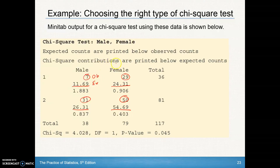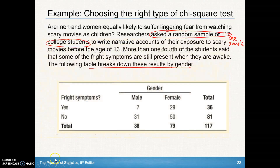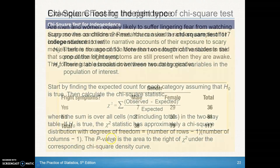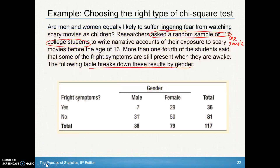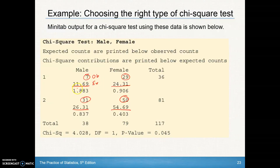The chi-square contributions are printed below as well. These are the individual chi-square calculations for each cell — that is, taking the observed minus the expected, squaring it, and dividing by the expected. Those are the individual components for each of the different cells.